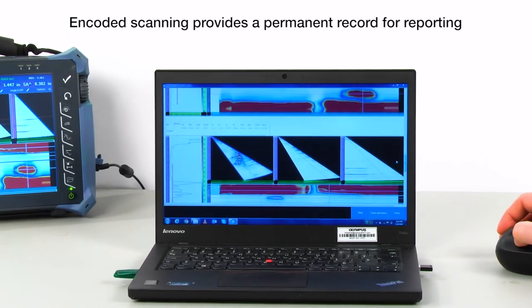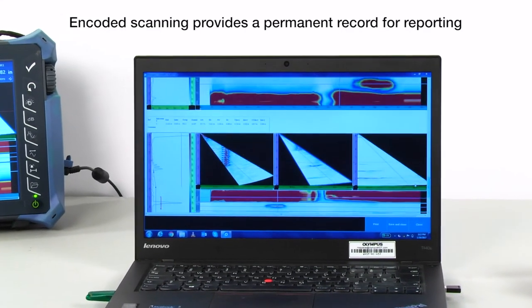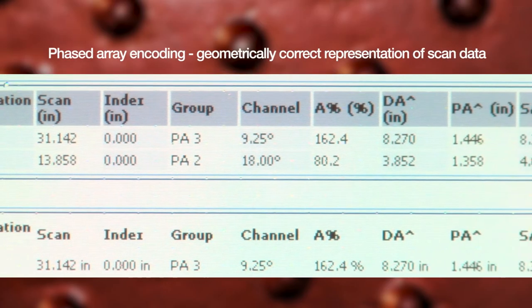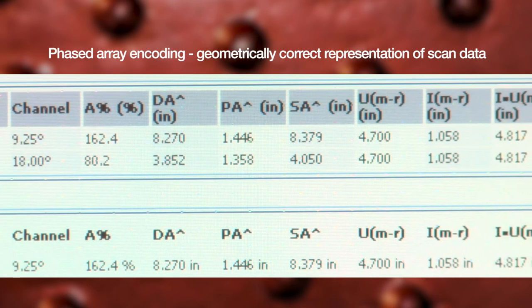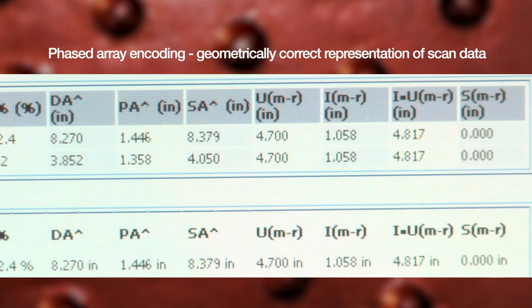Encoded scanning systems provide a permanent record for reporting and monitoring defects. Phased array encoding also provides geometrically correct representation of the scan data, giving the user greater confidence when locating and sizing defects.